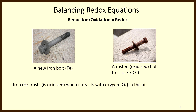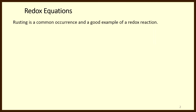To be clear, iron rusts — that is, it's oxidized — when it reacts with oxygen in the air. Here is the chemical equation for the reaction forming iron(III) oxide. Rusting is a common occurrence and it's a good example of a redox equation.